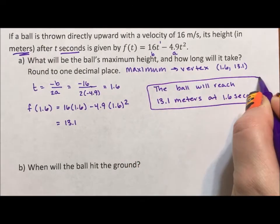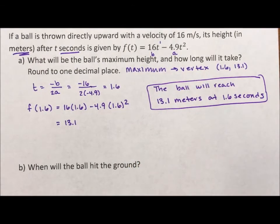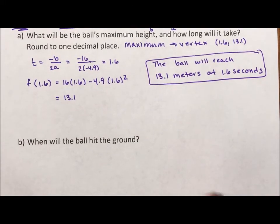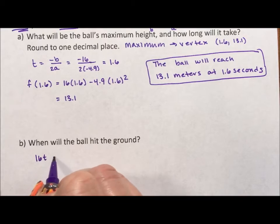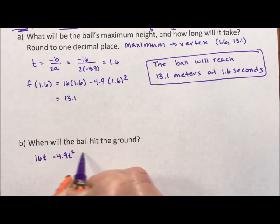Next it says, when will the ball hit the ground? So it'll hit the ground when the equation equals zero. So when 16t minus 4.9t squared equals zero.